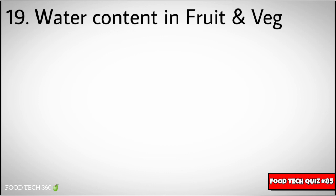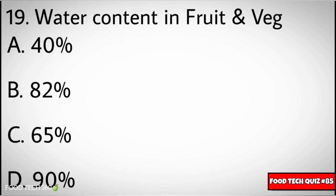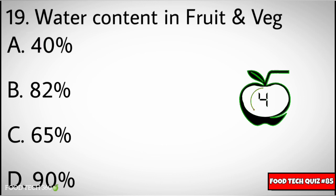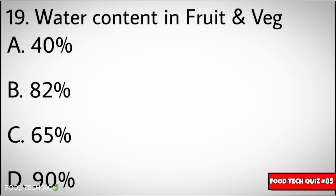Question number nineteen: water content in fruits and vegetables. Options: A) 40%, B) 82%, C) 65%, D) 90%. Correct answer: D) 90%.